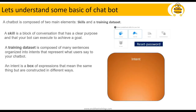A training data set is composed of many sentences organized into intents that represent what users say to your chatbot. For example, when a user connects to the chat window for the first time, they might greet you by saying 'hola', 'hello', or 'ni hao' — all these different statements are organized together as an intent, and that becomes your training data set. An intent is a box of expressions that mean the same thing — for example, 'hello', 'hi', 'hey', 'how are you' all mean greeting. The meaning is the same but said in different ways.